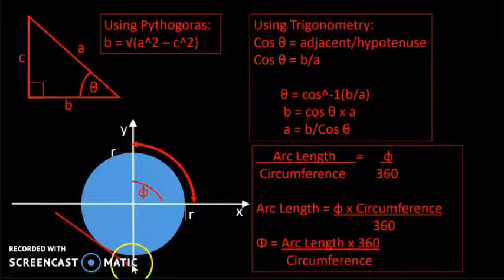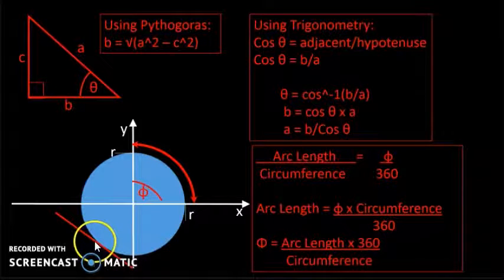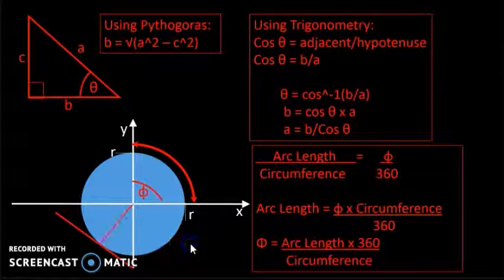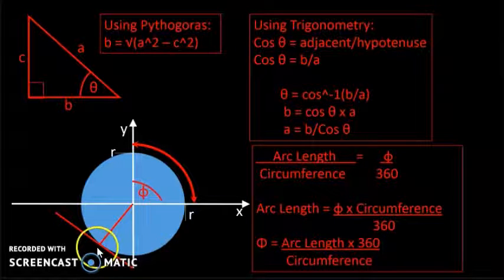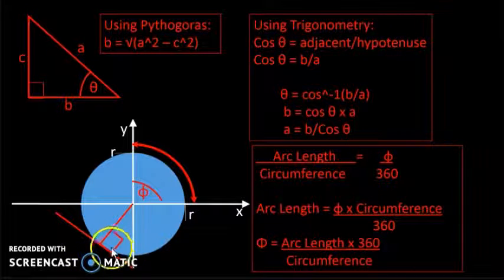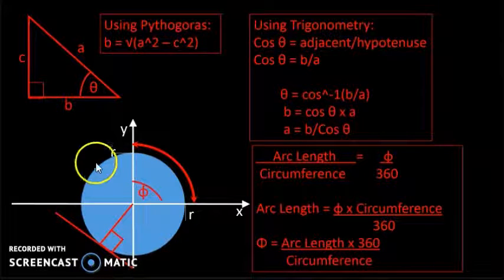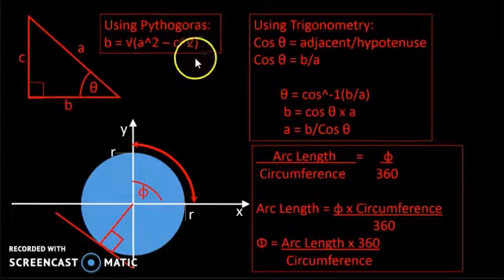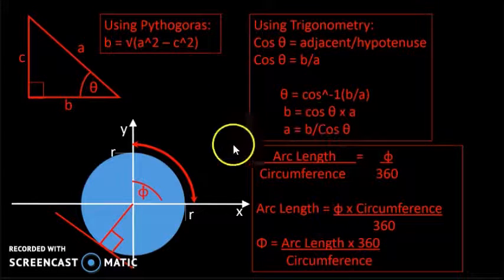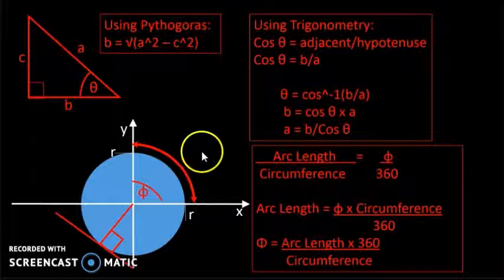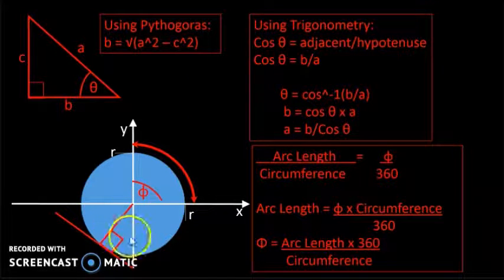If we have a tangent from a point to the circle, and we draw a line from the centre of the circle to where the tangent touches the circle, we always get a right angle triangle. So we can use these expressions and geometric facts to find various angles and distances.